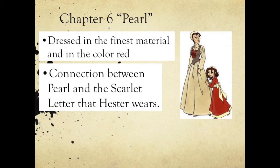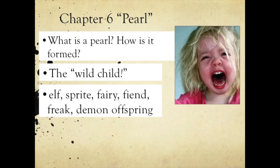Pearl is a wild child. She is described throughout Chapter 6 with various terms such as an elf, a sprite, a fairy, a fiend, a freak, even a demon offspring. The idea is that she is wild.